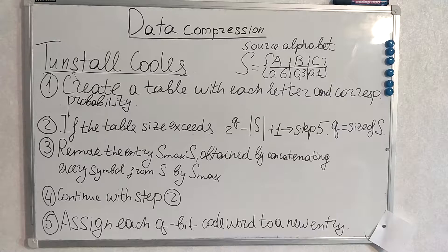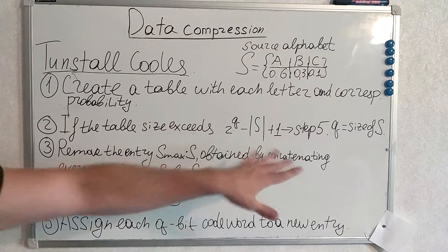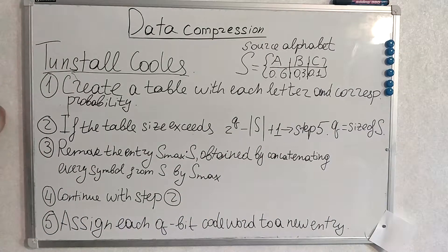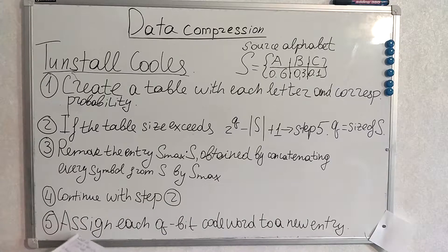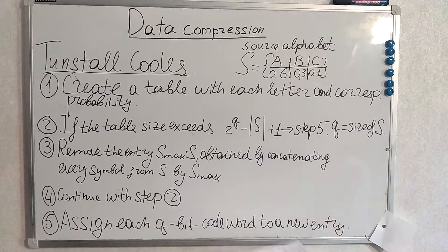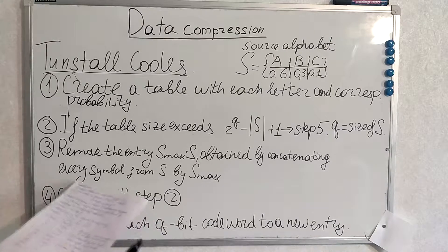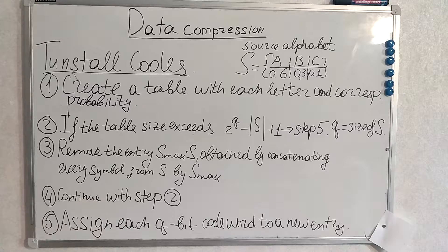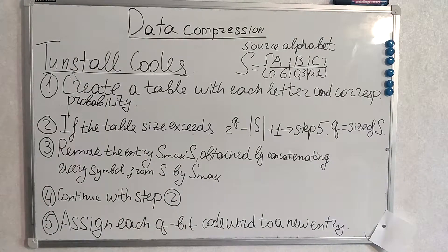If the table size exceeds some size — we will calculate it in an example, it will become clearer — we go to step 5. We terminate the algorithm and assign each codeword to a new entry. If not, we remove some entry, which we will multiply with the probabilities of our symbols.